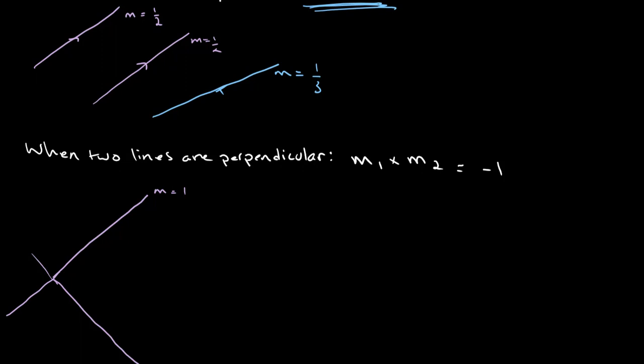So, m is equal to negative 1. Then what this essentially means is that these two lines intersect at 90 degree angles. So, all of these will be 90 degrees.